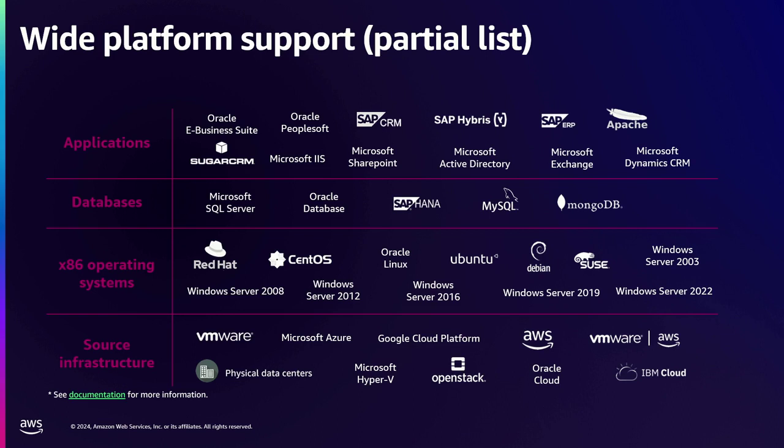Since DRS is agent-based, it doesn't matter if it's running on VMware or other cloud providers — you install an agent into any of the compatible operating systems. It's a wide range, from Windows 2003 — yes, there's a way to protect that — up to Windows 2022, plus the vast majority of CentOS, Ubuntu, Red Hat, and SUSE Linux.